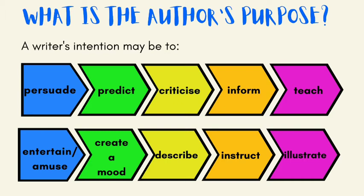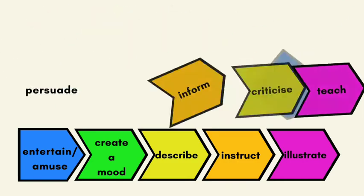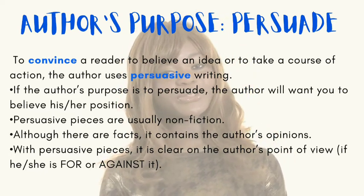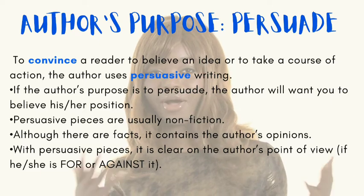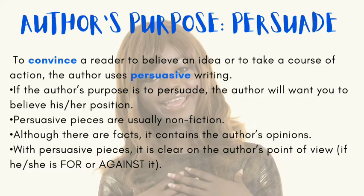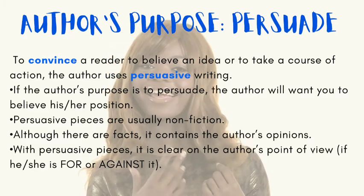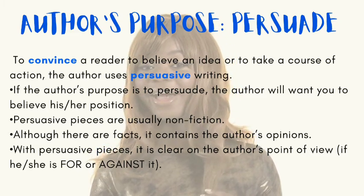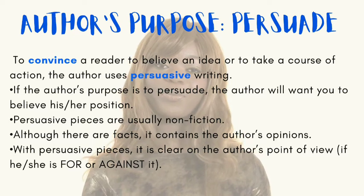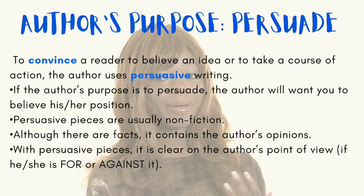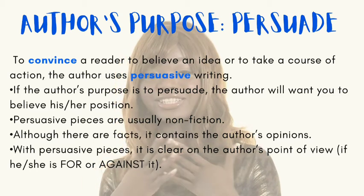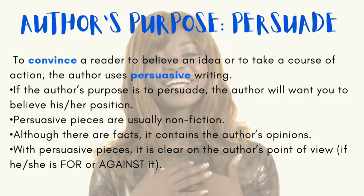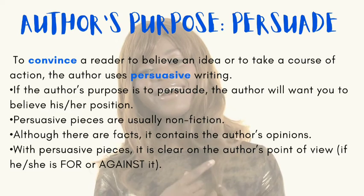Now let us take a closer look at the four main types of author's purpose. The first one is to persuade — to convince a reader to believe an idea or take a course of action. The author uses persuasive writing. If the author's purpose is to persuade, the author will want you to believe his or her position. Persuasive pieces are usually non-fiction. Although there are facts, it contains the author's opinions, and the author's point of view — whether for or against — is clear.